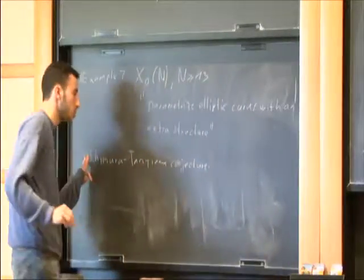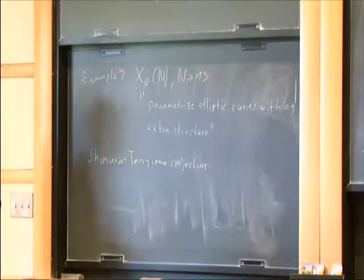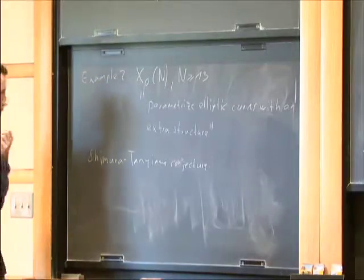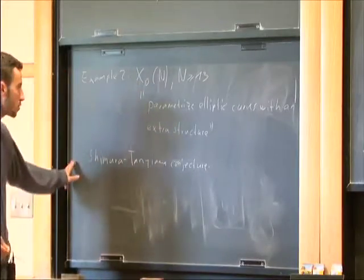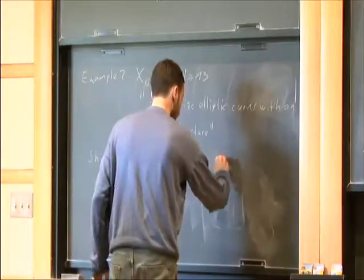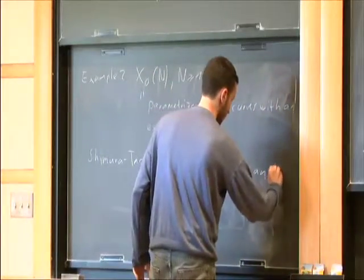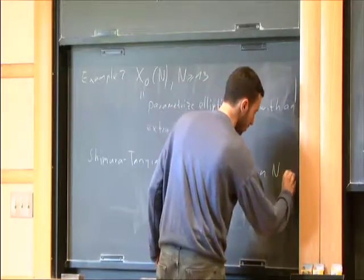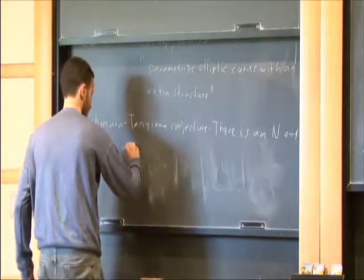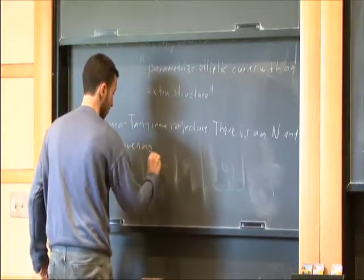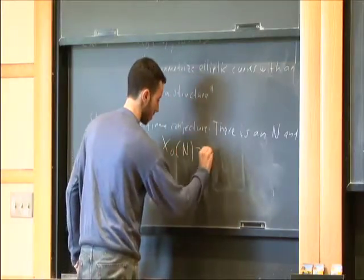This was proved by Taylor and Wiles for most elliptic curves over Q, and the proof was completed later by Breuil, Conrad, Diamond, and again Taylor. It says that there is an n and a covering from X_0(n) to E.